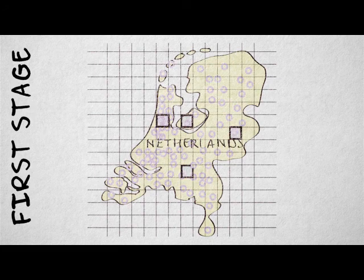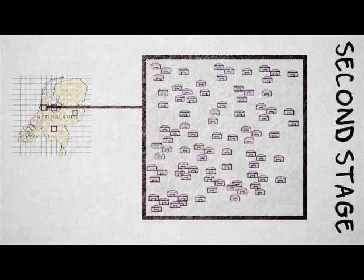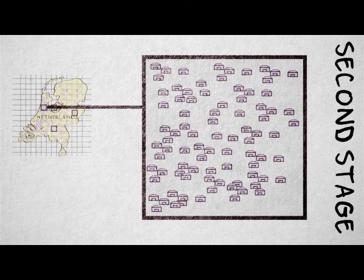We can use stratification to make sure we include districts in urban and rural areas. In the second stage, we randomly select schools from the previously selected districts. Students are now clustered in schools.